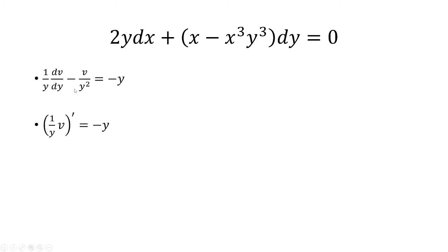Notice that this is just a product rule. The derivative of 1 over y is negative 1 over y squared. The derivative of v is dv over dy. So this is a product rule of 1 over y times v.